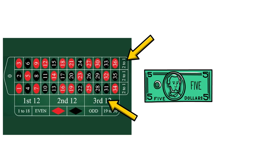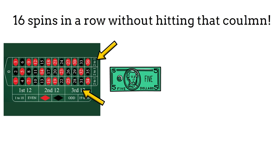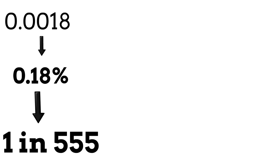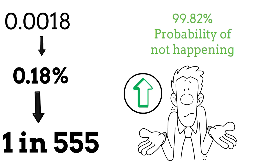It will now need 16 spins in a row without hitting that column for your Fibonacci system to fail. The probability of not hitting a particular column 16 times in a row is 0.0018, or as a percentage that's 0.18%. That's a 1 in 555 probability of happening. So with a 99.82% probability of that not happening, this could well be the best risk to reward betting system I've ever seen.